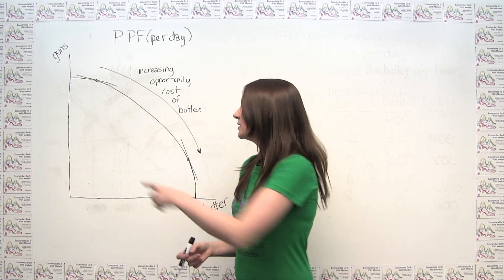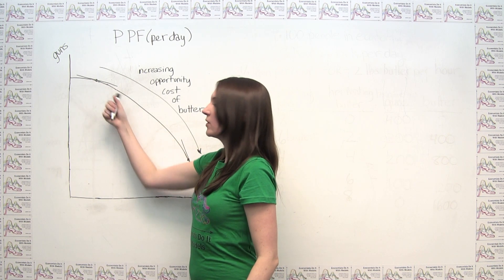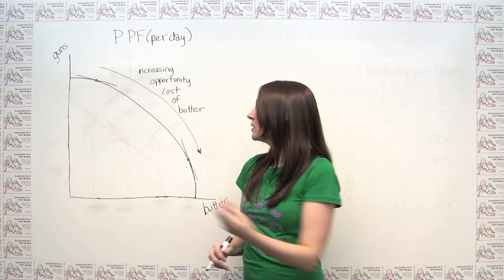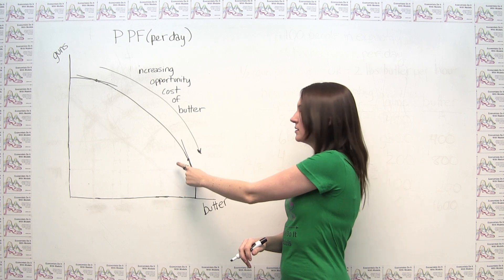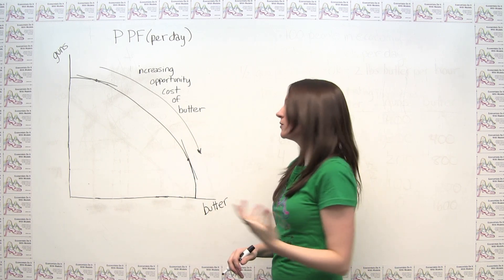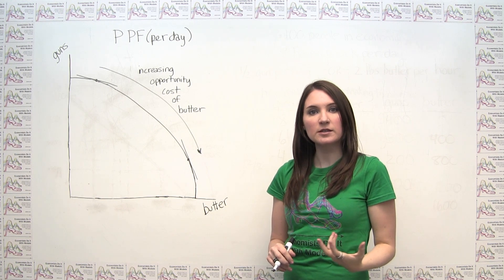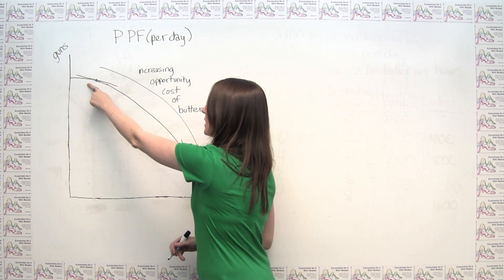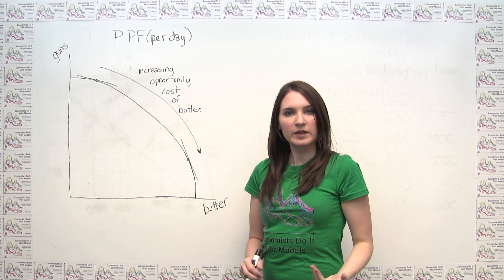Mathematically, the slope of a curve at a particular point is the slope of a line tangent to the curve at that point. When we're towards the top of our production possibilities frontier, our tangent lines are pretty shallow, meaning they have a small magnitude slope. Conversely, as we go down and to the right on our production possibilities frontier, the tangent lines get steeper in magnitude. So towards the bottom right, we're seeing slopes much larger in magnitude than at the top. Because the slope represents the opportunity cost of the item on the x-axis — butter in this example — as we go down and to the right, this represents an increasing opportunity cost of butter.